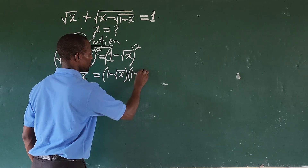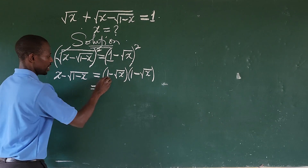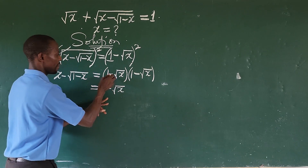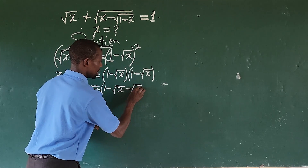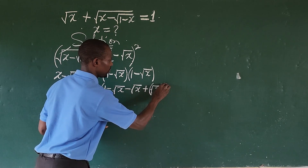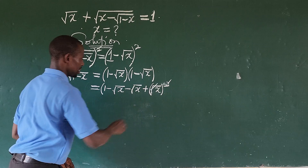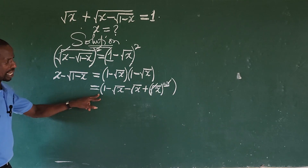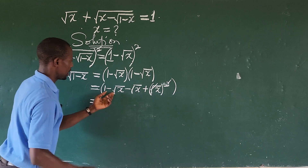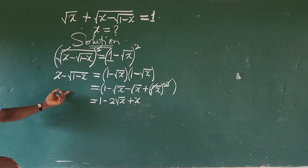On the right-hand side we expand (1 minus √x) squared. Opening up the brackets: 1 times 1 gives 1; 1 times negative √x gives minus √x; negative √x times 1 gives minus √x; and negative √x times negative √x gives plus x. Combining the two middle terms gives minus 2√x.